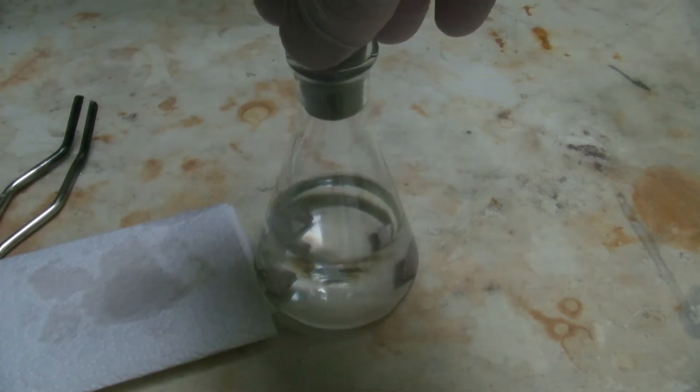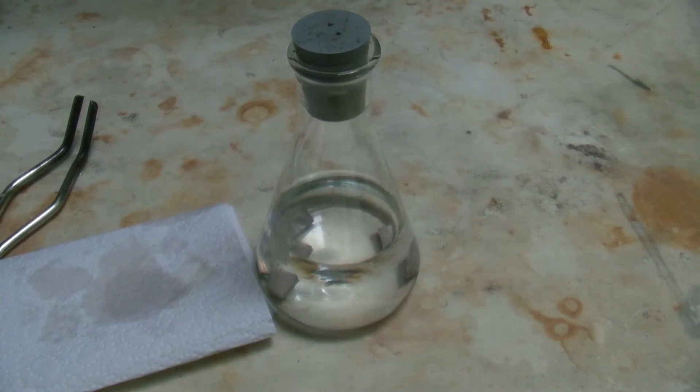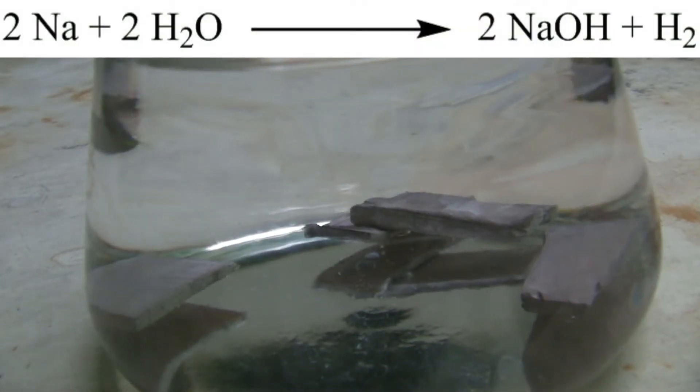The flask is closed loosely with a rubber stopper so that pressure can be released. It is then left to sit overnight. The sodium reacts with the water in the ether to form sodium hydroxide and hydrogen, so all traces of water are removed.